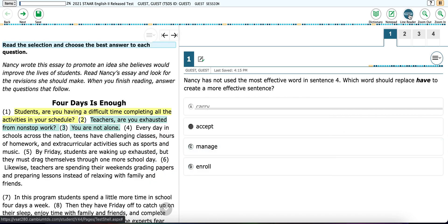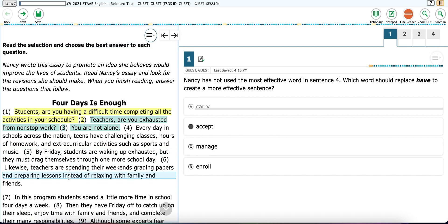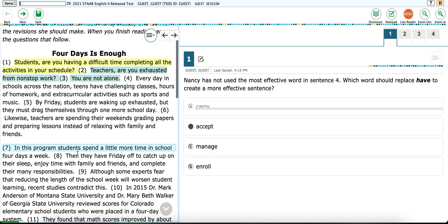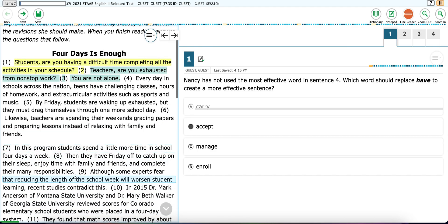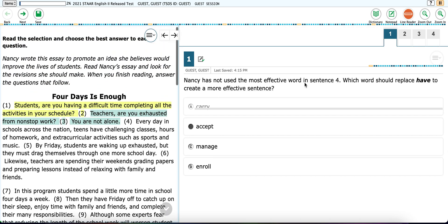You have a line reader. A line reader is where you can click on the text itself and it will highlight the line so you can read it and know exactly where you're at. To turn it off again, you would just click line reader.